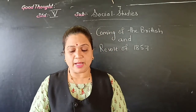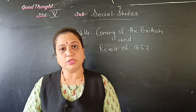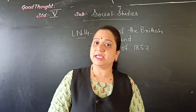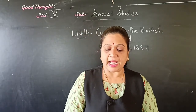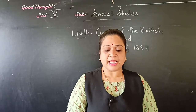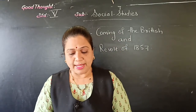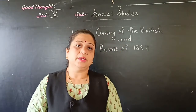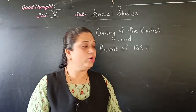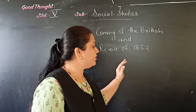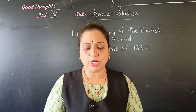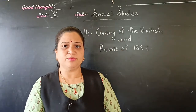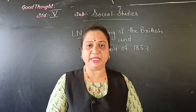Rani Lakshmi Bhai was killed in this revolt and Nana Saheb continued the battle. This revolt of 1857 continued for two years before it was crushed by the Britishers.